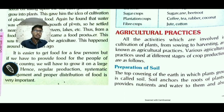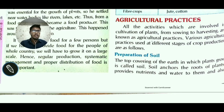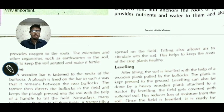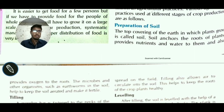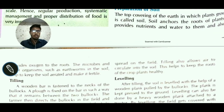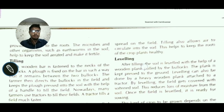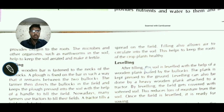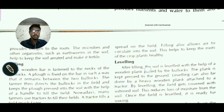The top covering of earth in which plants grow is called soil. The roots of plants absorb nutrients and water from it, and it also provides oxygen to the roots. Organisms such as earthworms in the soil help to keep it aerated and make it fertile.